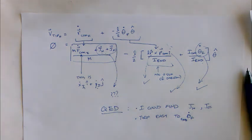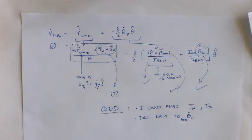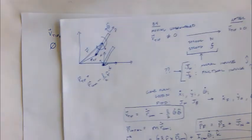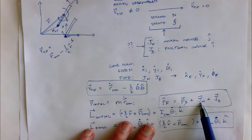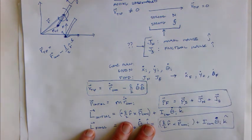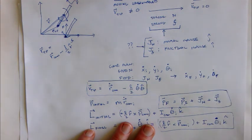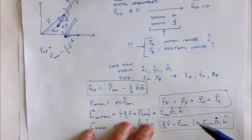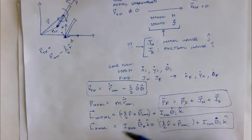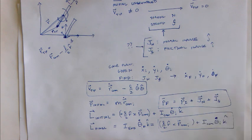The big idea I want you to take away is this: impulse makes sense both for linear momentum — the change in linear momentum is due to a force impulse — and it also makes sense for angular momentum. You can calculate a torque impulse in the same way you calculate a torque as R cross F; you calculate a torque impulse as R cross impulse. And that torque impulse can give you a change in angular momentum in the same way that a force impulse can give you a change in linear momentum.